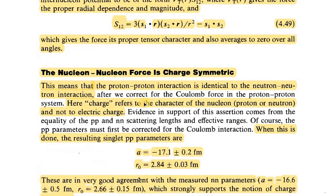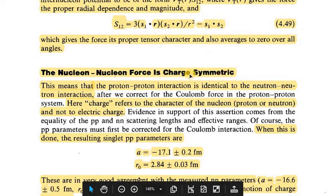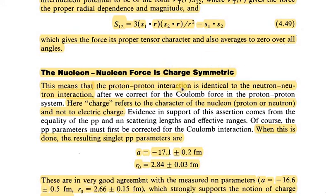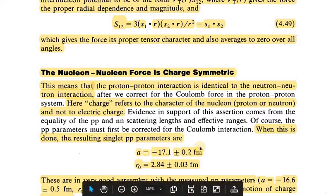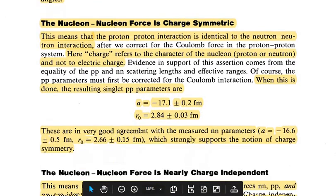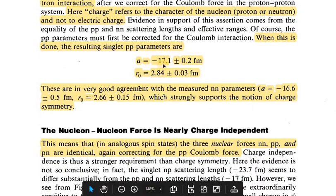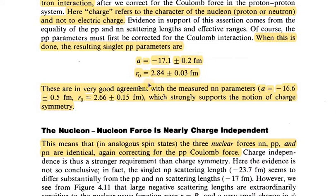Another property: The nuclear-nuclear force is charge symmetric. This means that the proton-proton interaction is identical to the neutron-neutron interaction. Here 'charge' refers to the character of the nucleon and not to electric charge. When this is done, the resulting singlet pp parameters are a = -17.1 ± 0.2 fm, r₀ = 2.84 ± 0.03 fm. These are in very good agreement with the measured neutron-neutron parameters.